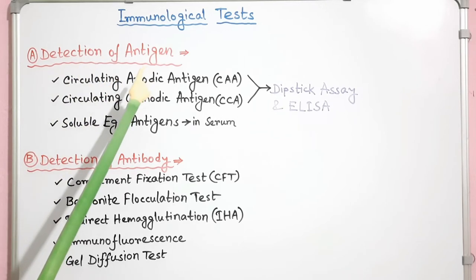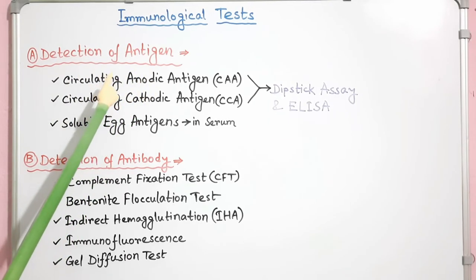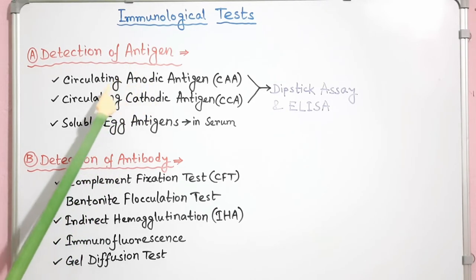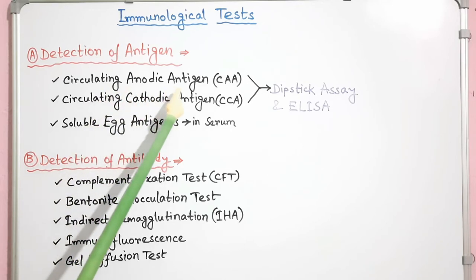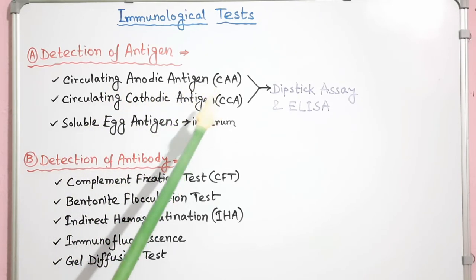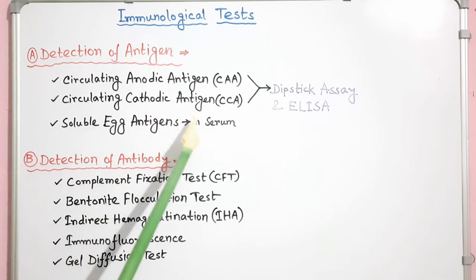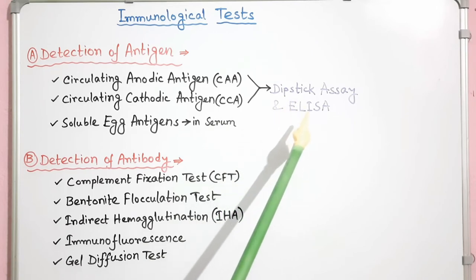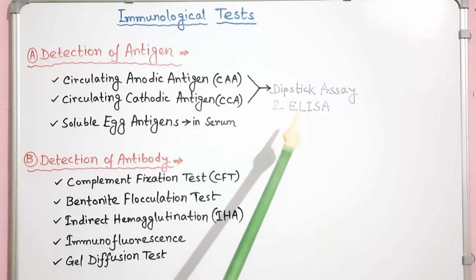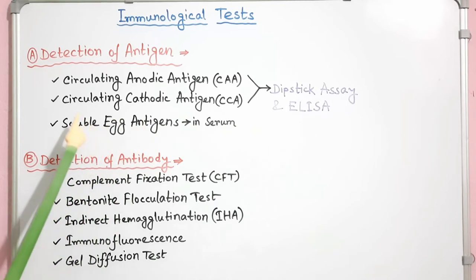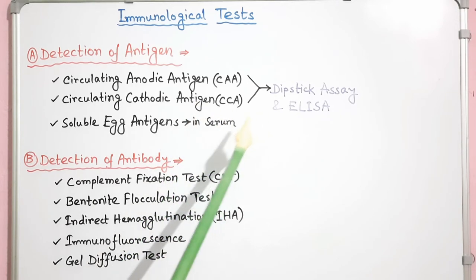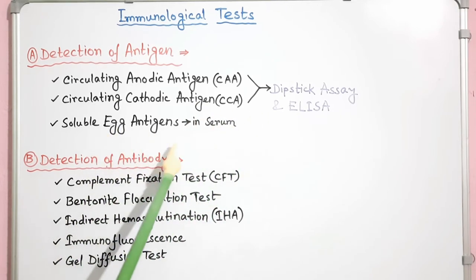Detection of Antigen: In this method, specific cystosome antigens are detected in serum or urine. The circulating anodic antigen (CAA) and circulating cathodic antigen (CCA) can be demonstrated by dipstick assay and ELISA. The test is very sensitive and specific but is available only in specialized laboratories. Soluble egg antigens (SEA) can also be demonstrated in serum.